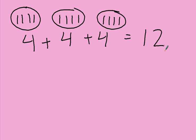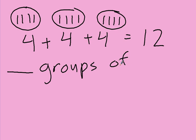One thing your math book is going to ask you to do is write it out with how many groups of what equals what — blank groups of blank equals blank. So, how many groups do I have? Show me on your fingers. I have three groups — a group here, a group here, and a group here. One, two, three groups. I have three groups of how much? How much is in each group? That's right — three groups of four.